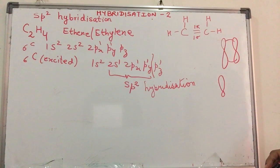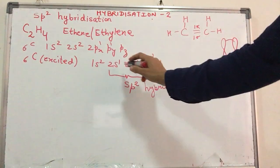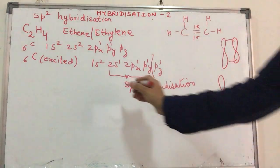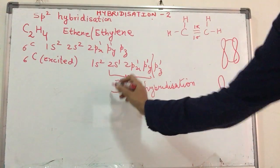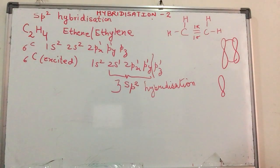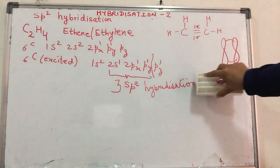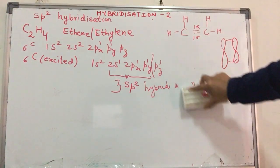How many sp2 hybrid orbitals will be formed? 1, 2, 3. Three are participating. So there will be three sp2 hybrid orbitals formed. Now when three sp2 hybrid orbitals are formed, again, we need to align themselves. So there are three bond angles.